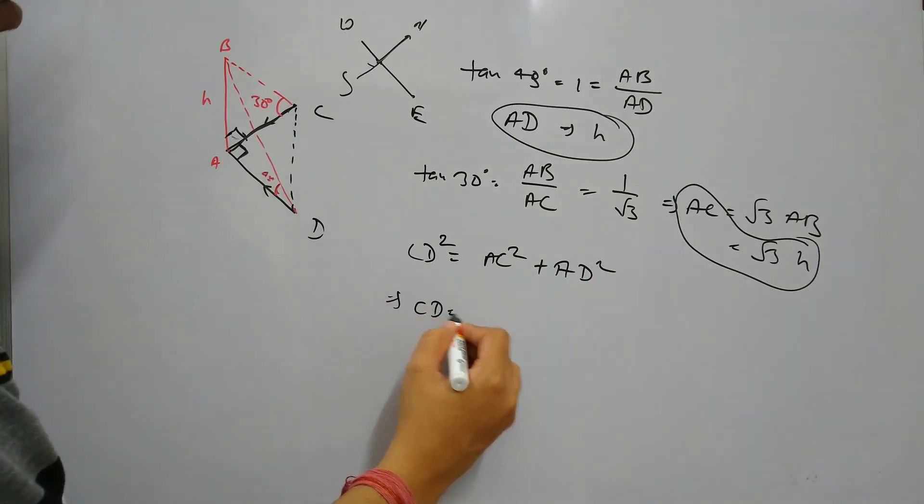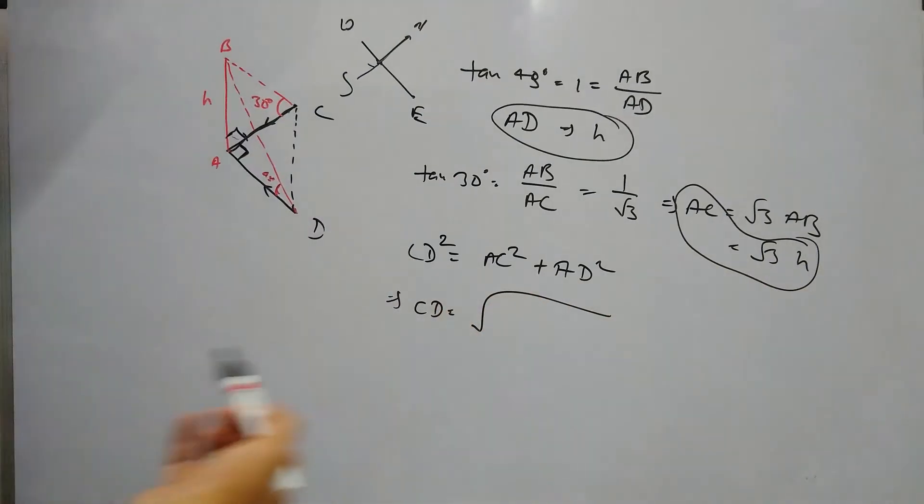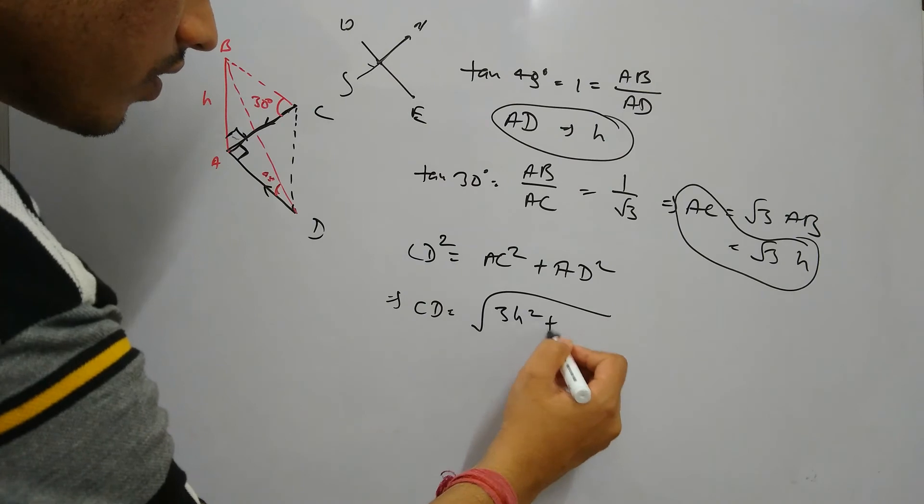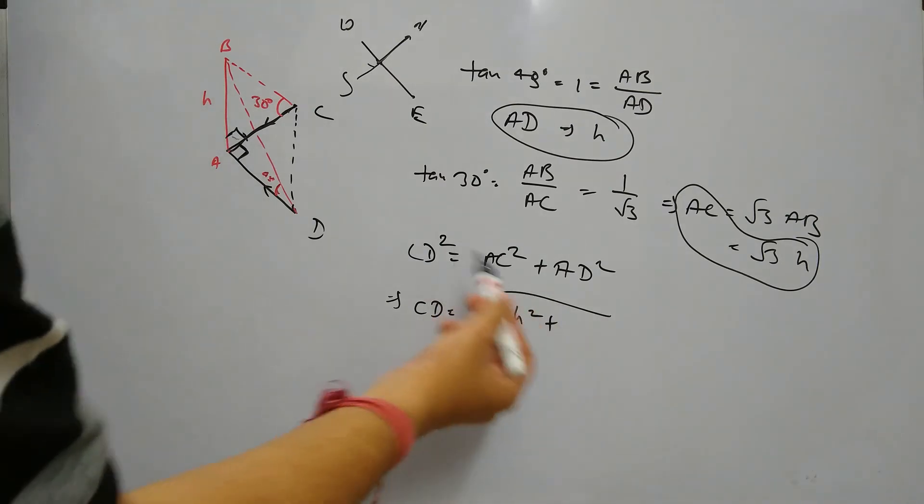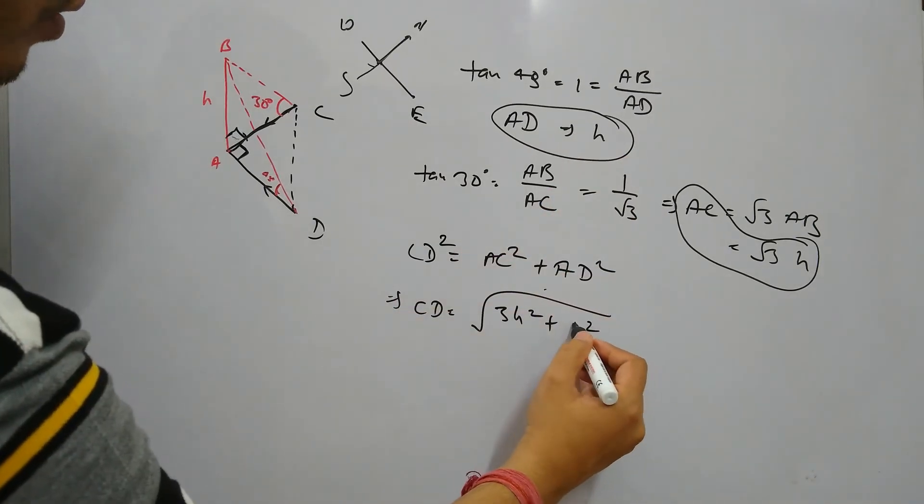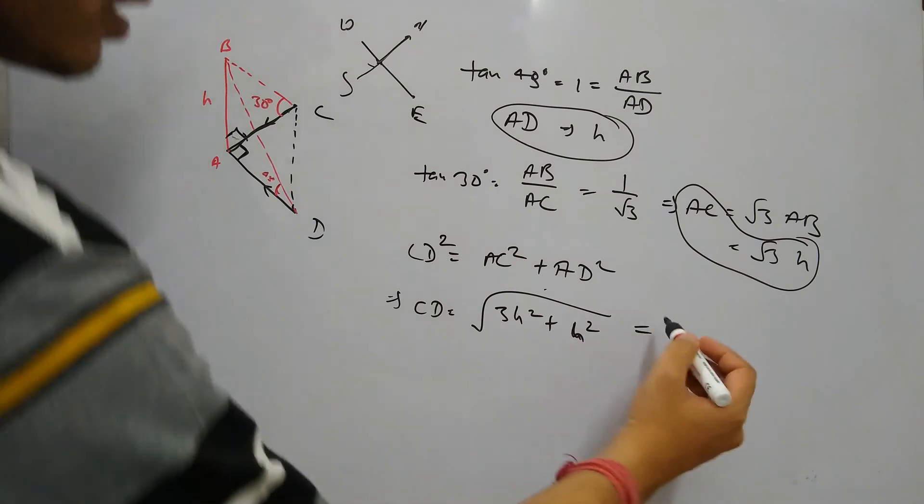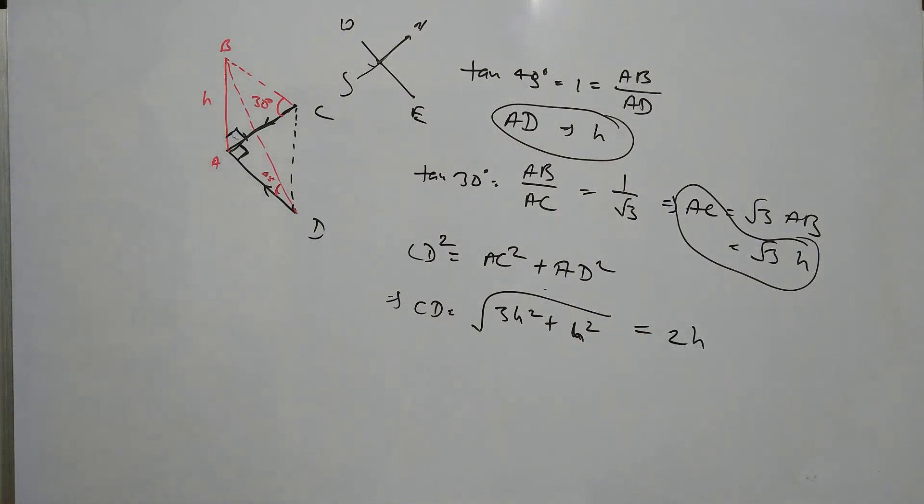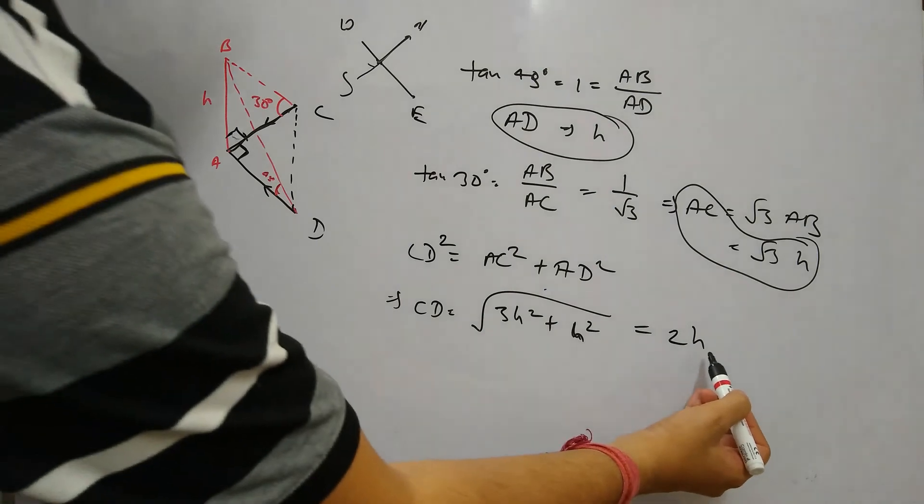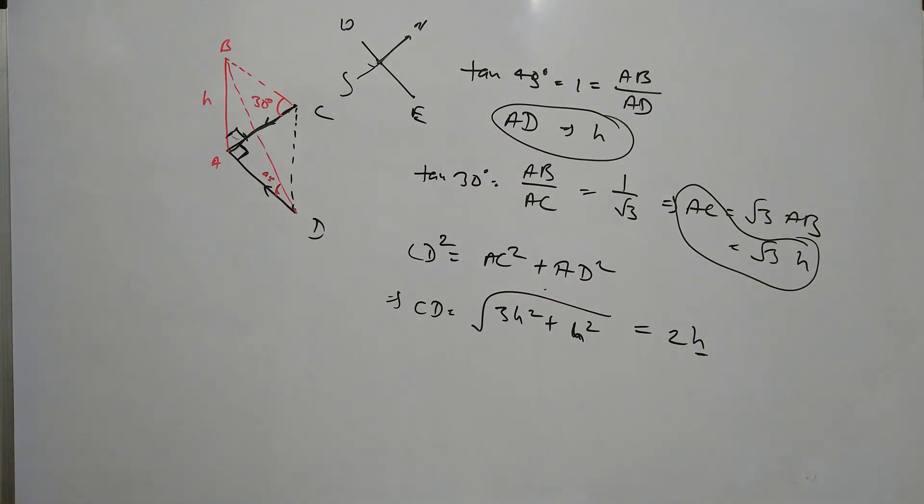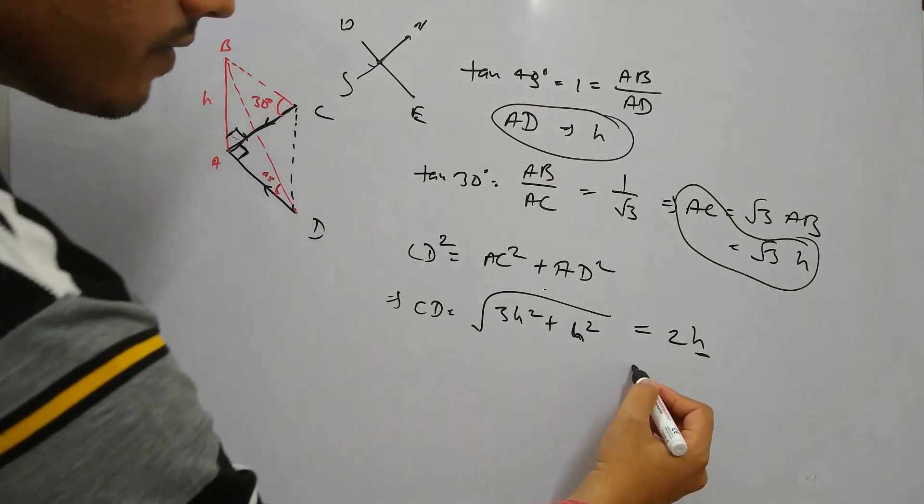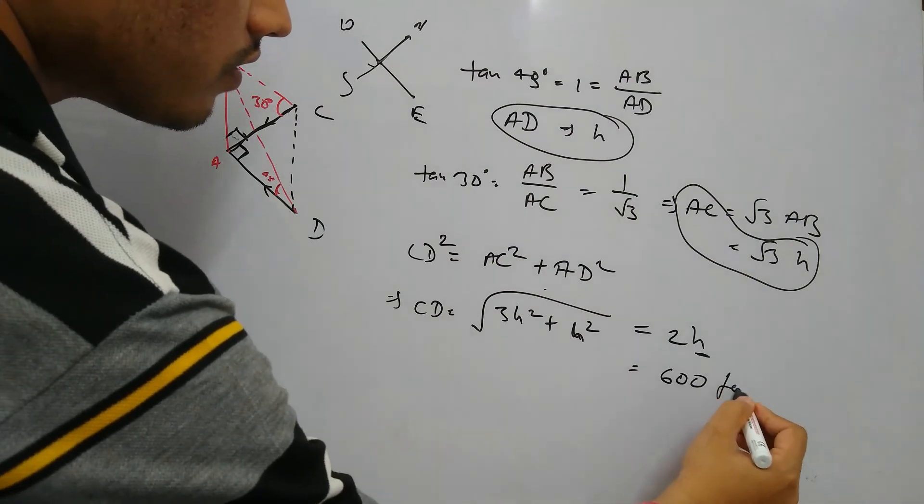And AD is H, so it's H square. So basically CD is root of 4H square, hence 2H. H is 300 meters given in the question - sorry, I forgot, it's feet. So H is 300 feet. So the answer is 600 feet.